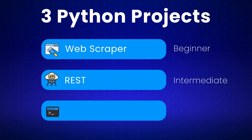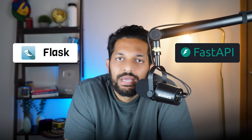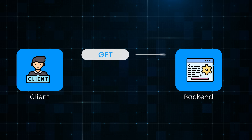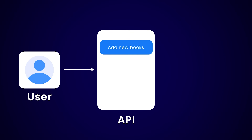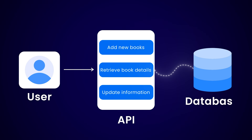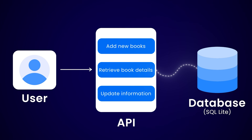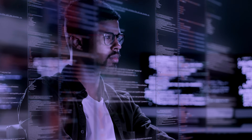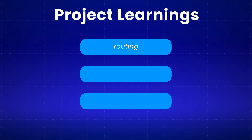For your intermediate project, build a REST API using Flask or FastAPI. Create a simple backend that can handle GET and POST requests — maybe an API for a book library where you can add books, retrieve book details, and update information. Connect it to a database using SQLite, which is built into Python. Learn how to structure your code into different modules, write tests for your API endpoints, and deploy it to the cloud. This project will teach you how real software is built: routing, API design, and database interactions — the skills companies actually care about.